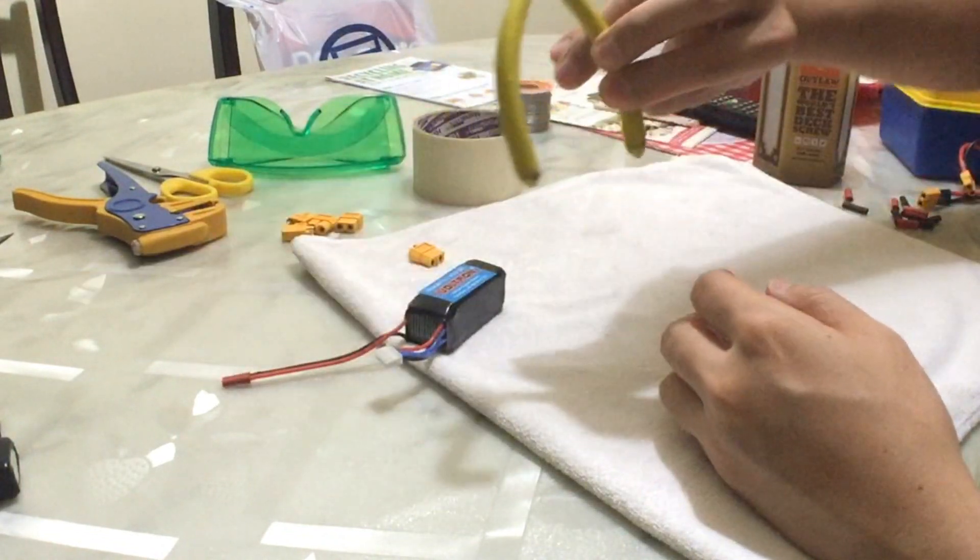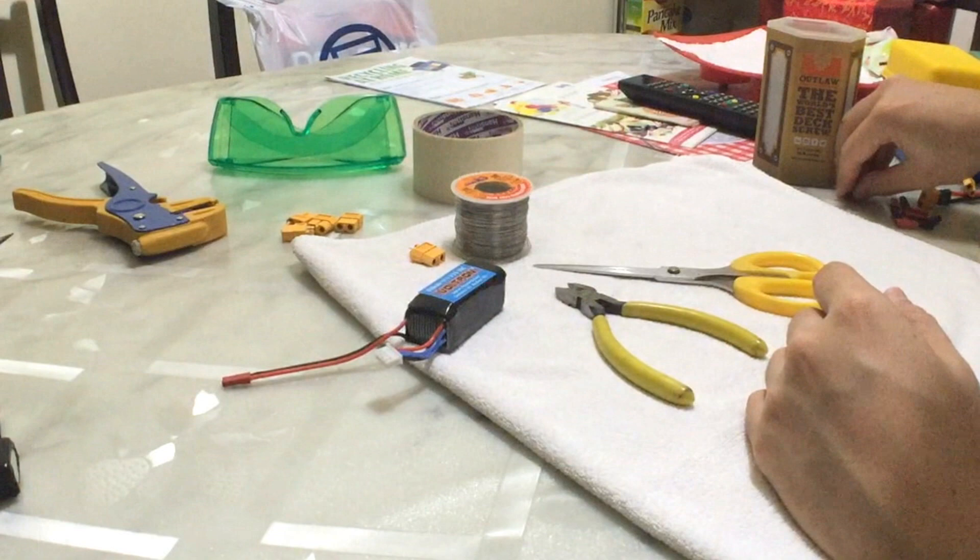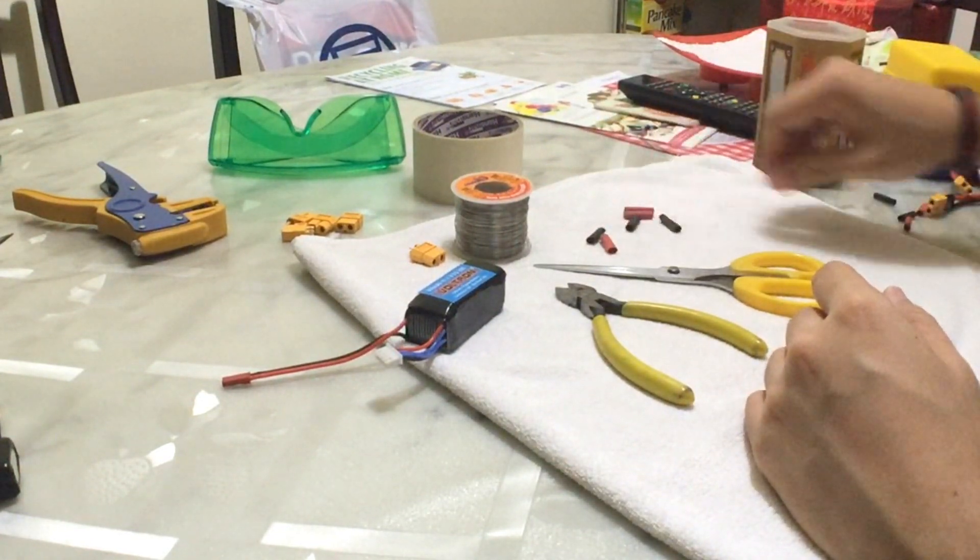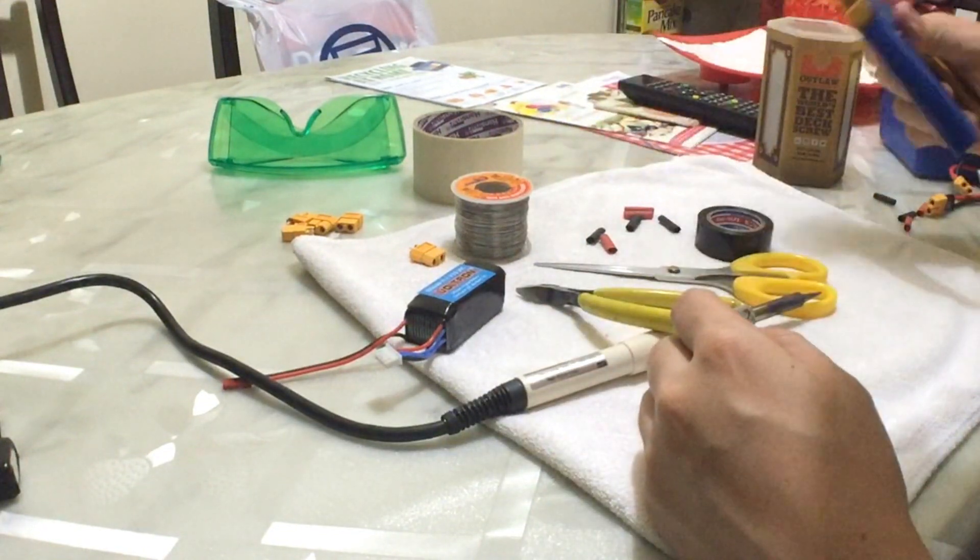Of course, you have your LiPos as well. A wire cutter tool. A pair of scissors if you need. Of course, you need solder. Then you're going to get a bunch of shrink wrap. Actually, I have a whole bunch here. E-tape. A soldering iron, of course. And I have a wire stripper tool.